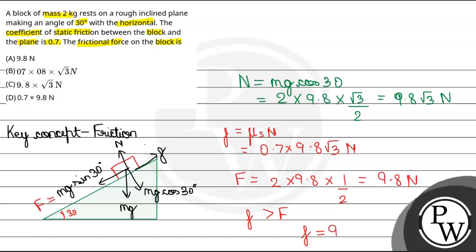F will be equal to 9.8 N. So checking the options, option A is our correct answer. Hope you understood it well. Best of luck.